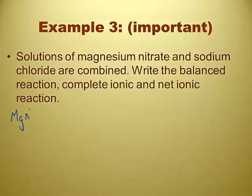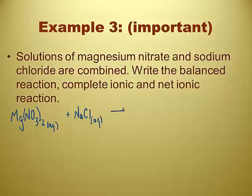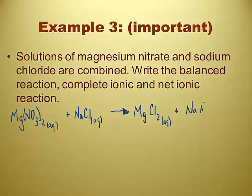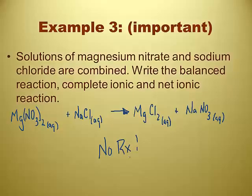Solutions of magnesium nitrate — nitrates are all aqueous — and sodium chloride, because sodium is group 1A, so that's aqueous too. These two are in separate beakers; you pour them together. The products would be magnesium chloride — that's soluble — and sodium nitrate — sodium is group 1 and nitrates are all soluble — so that's aqueous too. There's no precipitate forming here. No precipitate means no reaction. All you've got at the end is still a solution that just looks like water.